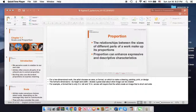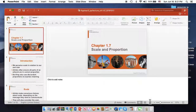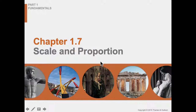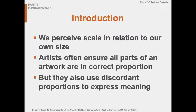1.7 Scale and Proportion, Part One. We're in our principles of scale and proportion — our elements and how we're going to use them: size and relative scale. We perceive scale in relation to our own size, and in the art world, the human form at roughly six feet in height is considered regular human scale.